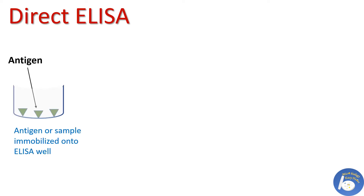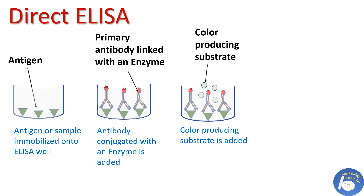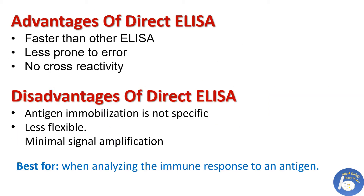What is the procedure of direct ELISA? First, a sample containing antigen is coated onto the ELISA well plate. Then, a primary antibody conjugated with an enzyme is added. After that, a color-producing substrate is added. If a reaction between antigen and antibody takes place, the enzyme reacts with the color-producing substrate and gives a particular color. The color intensity is then observed by spectrophotometer.